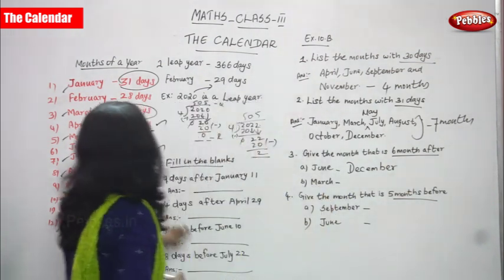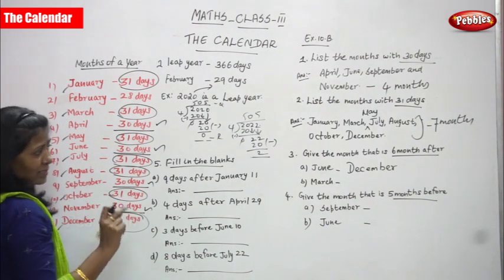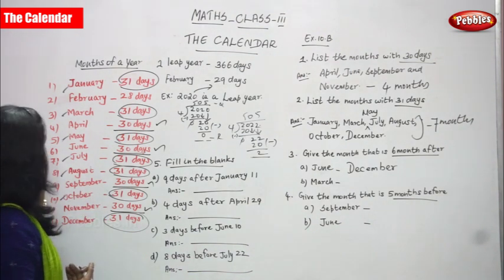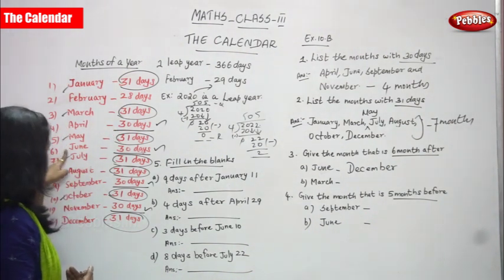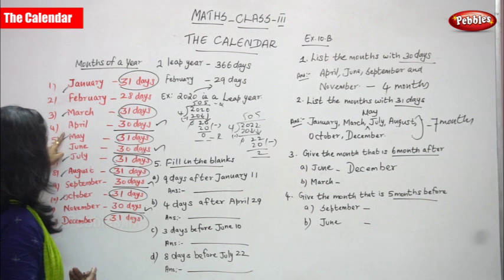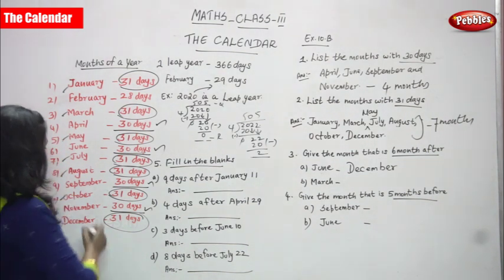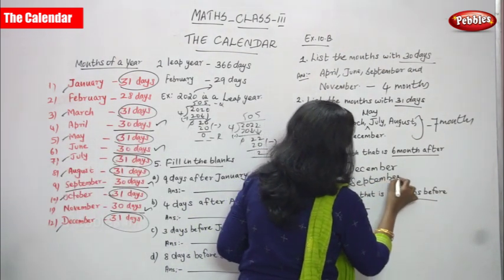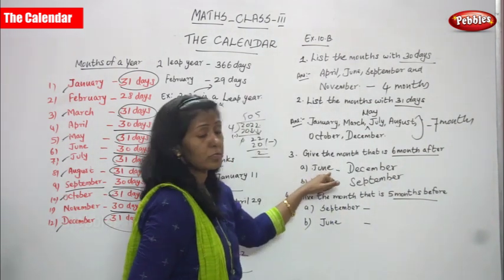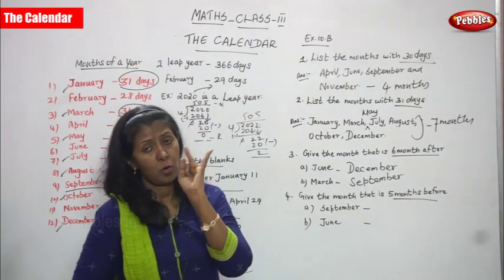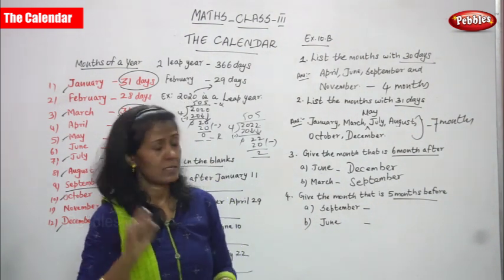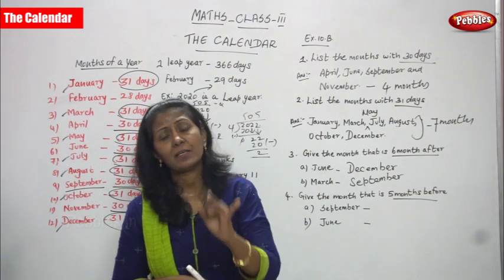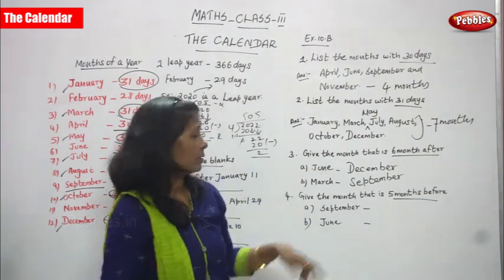Next question: 6 months after March. You should not consider March; count from April: April, May, June, July, August, September. That gives 6 months, so September is the right answer for 6 months after March.